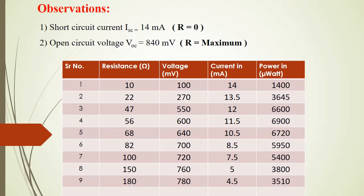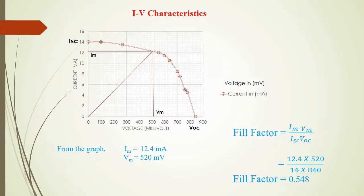As per the observations taken, short-circuit current is 14 milliamperes and open-circuit voltage is 840 millivolts. This observation table gives us the voltage and current values for the variation in resistance, and the last column gives the power in microwatts. This graph is plotted using Excel — on the x-axis is voltage in millivolts and on the y-axis current in milliamperes, with VOC, ISC, IM, and VM shown. From the graph, the value of maximum current IM is 12.4 milliamperes and the maximum voltage VM is 520 millivolts. Using this, we calculate the fill factor, which comes out to be 0.548, that is 54.8%.